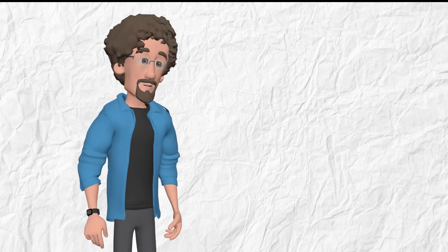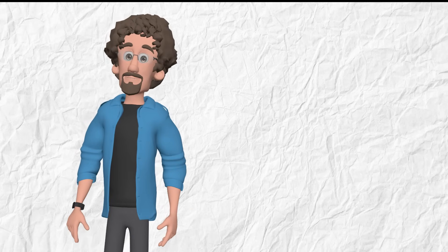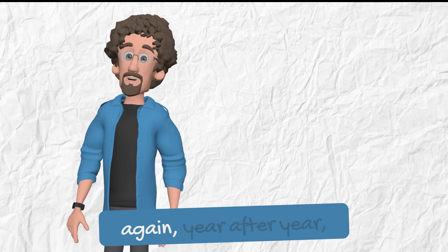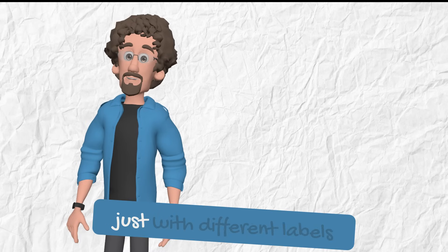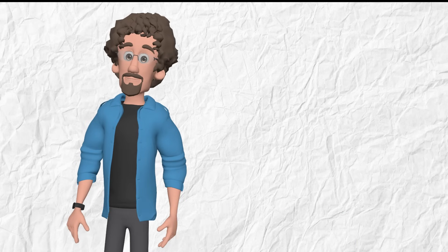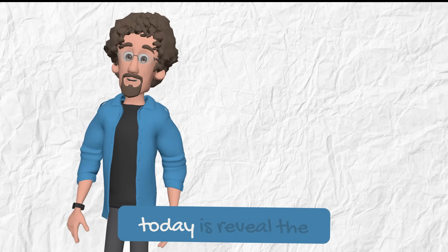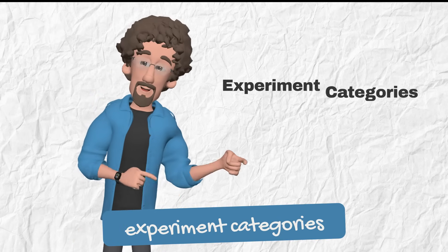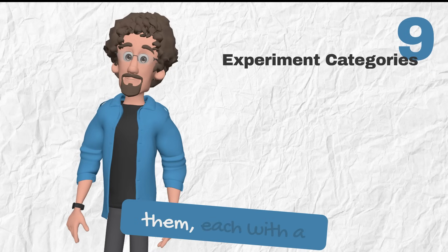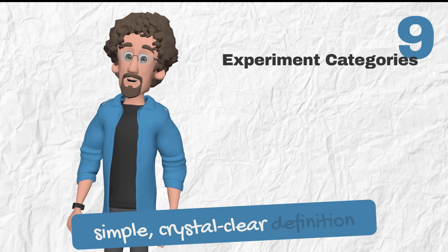Every Paper 6 investigation belongs to one of just a few types. That's right, the same style of experiment, repeated again and again, year after year, just with different labels. So, what we'll do today is reveal the experiment categories. There are nine of them, each with a simple, crystal-clear definition.